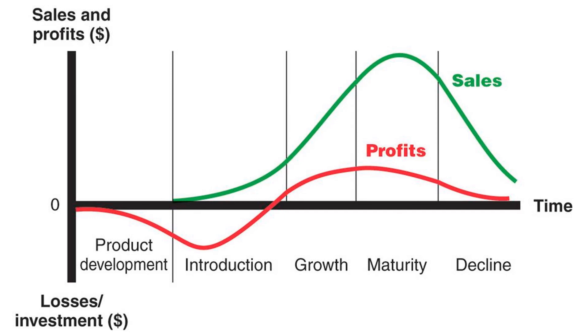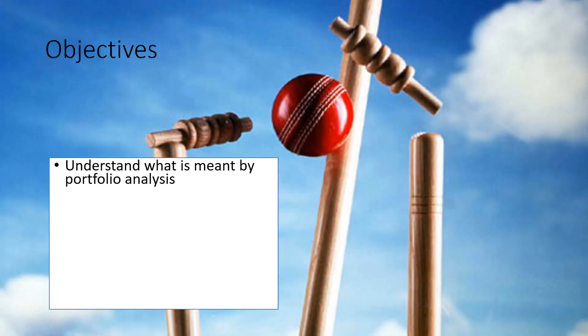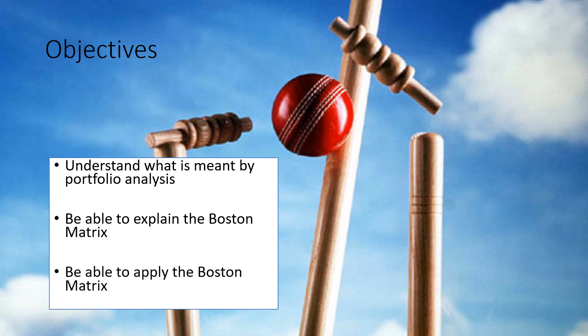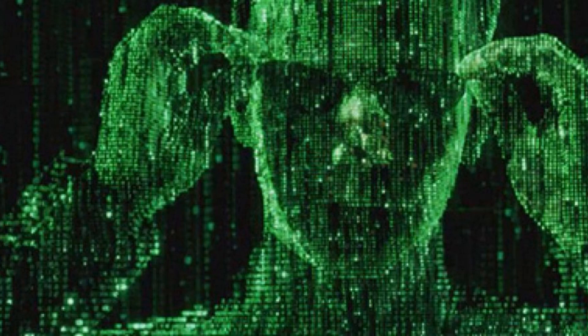This theory links back nicely to the product lifecycle: at maturity we're probably talking about cash cows, in growth we're talking about stars, at introduction it could be stars or problem children, and in decline we may be thinking about dogs. In this video we've looked at what is meant by portfolio analysis, explained the Boston Matrix, and considered how we might apply it to help with corporate strategies. Thank you very much.